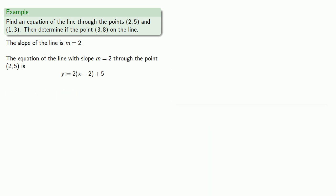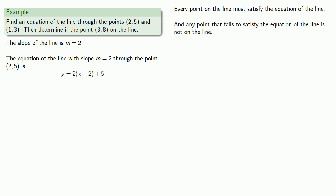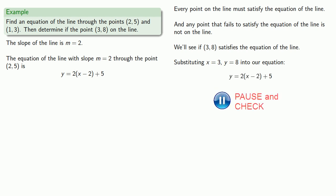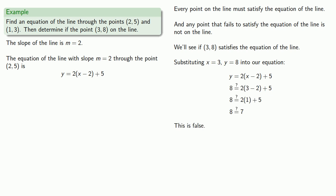To determine if (3, 8) is on the line, we use the fact that every point on the line must satisfy the equation of the line, and any point that fails to satisfy the equation is not on the line. Substituting x equals 3 and y equals 8 into our equation gives a false statement, so (3, 8) is not on the line.